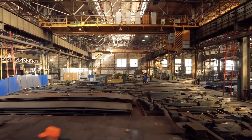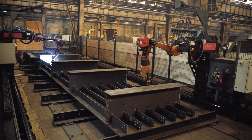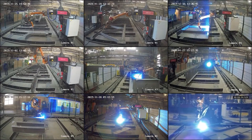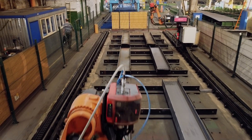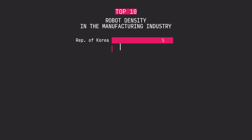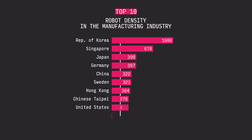In high-mix production, however, this approach is no longer viable. An enterprise that produces hundreds of different types of parts constantly switches from one part to another. In this scenario, both programming options require so much time and money that robots only lose you profit. In fact, this is the reason why robots are scarcely used even in the most advanced countries. In South Korea, for example, there are 1,000 units per 10,000 employees. Germany is at 397 units, and the USA is at 274 units per 10,000 jobs.